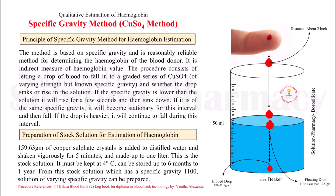if the drop of blood sinks to the bottom of the solution, it shows that the hemoglobin of the donor blood is 12.5 gram or above, meaning the donor can donate blood. If the drop floats, it means the specific gravity of the blood is less than 1.053, indicating the hemoglobin content is less than 12.5 gram. The density of the drop is directly proportional to the amount of hemoglobin in that drop of blood.